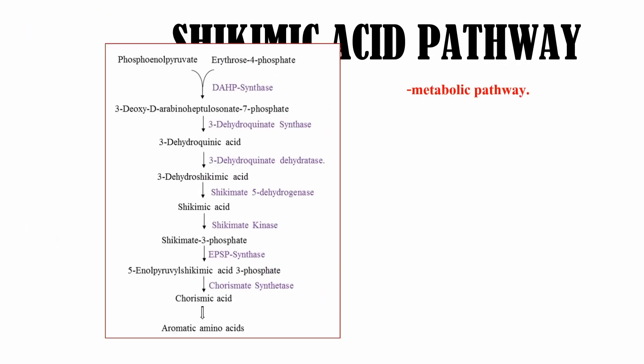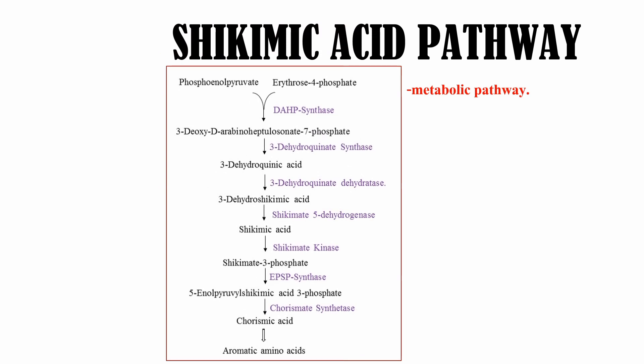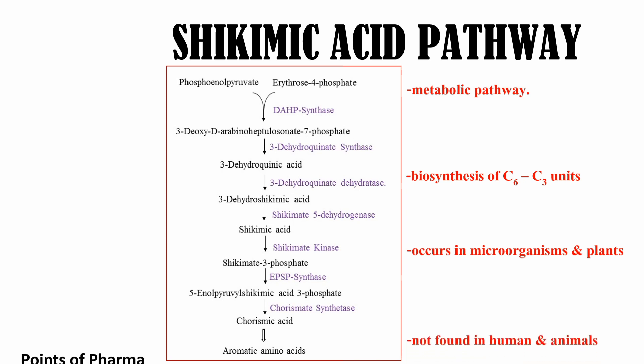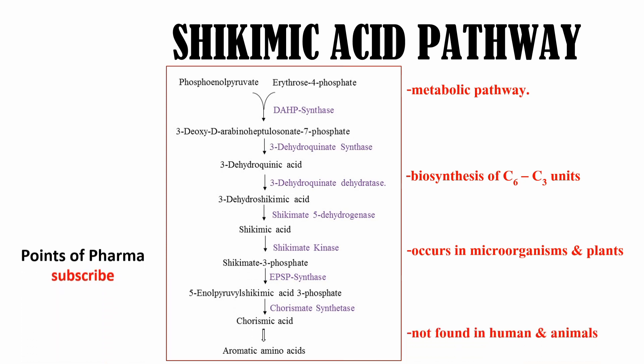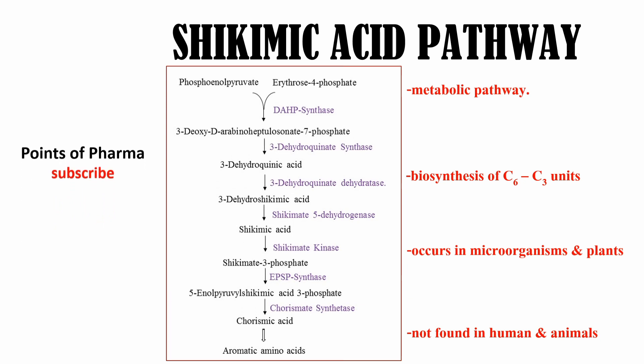Hello everyone, welcome to Points of Pharma. Today the topic is Shikimic Acid Pathway. Shikimic Acid Pathway is a metabolic pathway for the biosynthesis of an aromatic ring and a 3-carbon side chain. Shikimic Acid Pathway occurs in microorganisms and plants. It is not found in humans and animals.